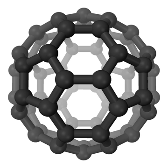Kerogen is a solid organic matter in sedimentary rocks. Consisting of an estimated 10^16 tons of carbon, it is the most abundant source of organic compounds on Earth, exceeding the total organic content of living matter by 10,000-fold. It is insoluble in normal organic solvents and it does not have a specific chemical formula.